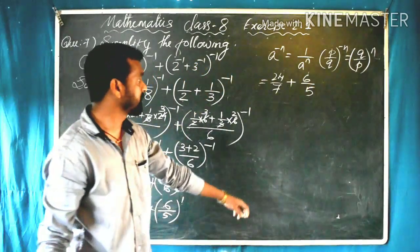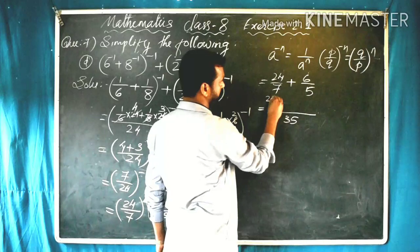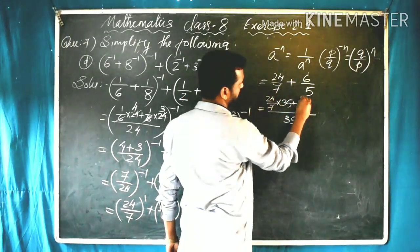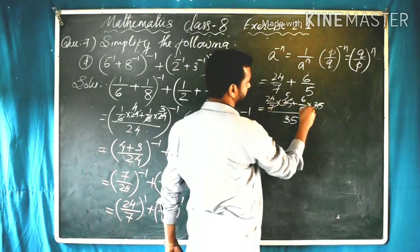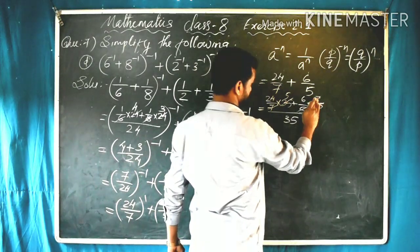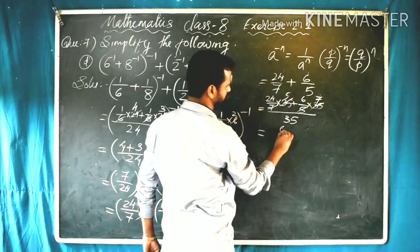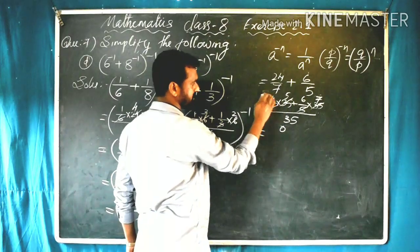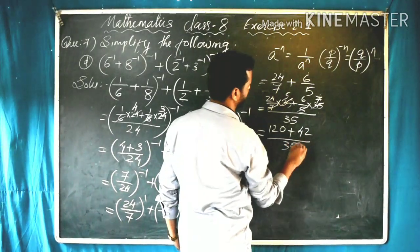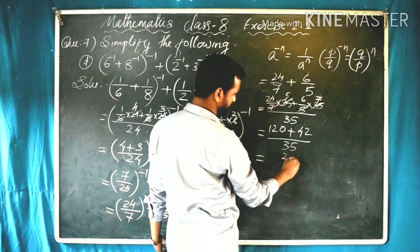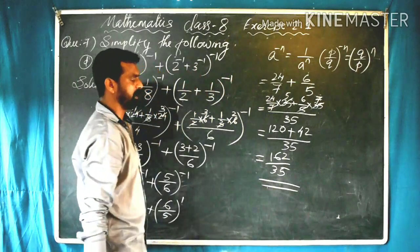Adding the numerator: 120 plus 42 equals 162, divided by 35. So the answer to question 7D is 162 divided by 35.